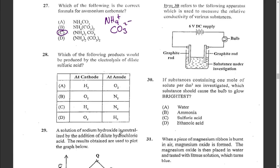Question twenty-eight: which products would be produced by the electrolysis of dilute sulfuric acid? When dilute sulfuric acid dissociates, H⁺ ions are present at the cathode and SO₄²⁻ and hydroxide ions are at the anode. Hydrogen gas is produced at the cathode. At the anode, since hydroxide is below sulfate in the electrochemical series, OH⁻ is preferentially discharged producing oxygen. So it is hydrogen at the cathode and oxygen at the anode — answer A.